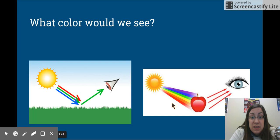Same over here. The sun is going to reflect all, or transmit all of its light to this apple. Then, the red is reflected to our eye, and we see that image.